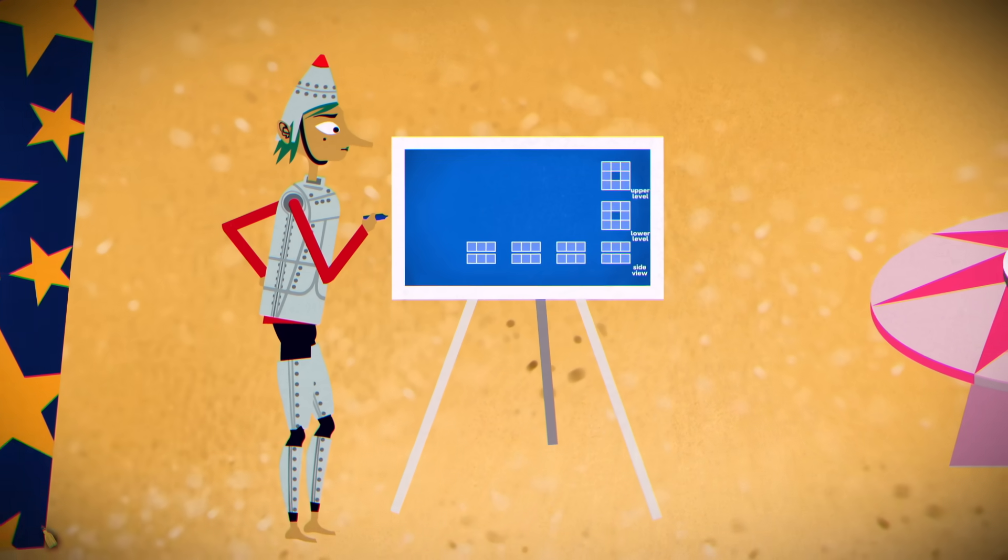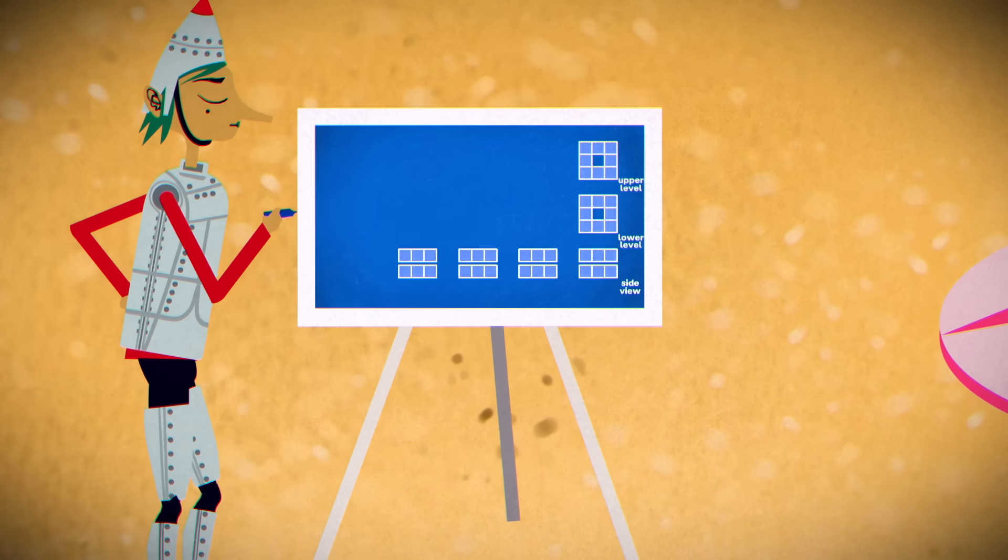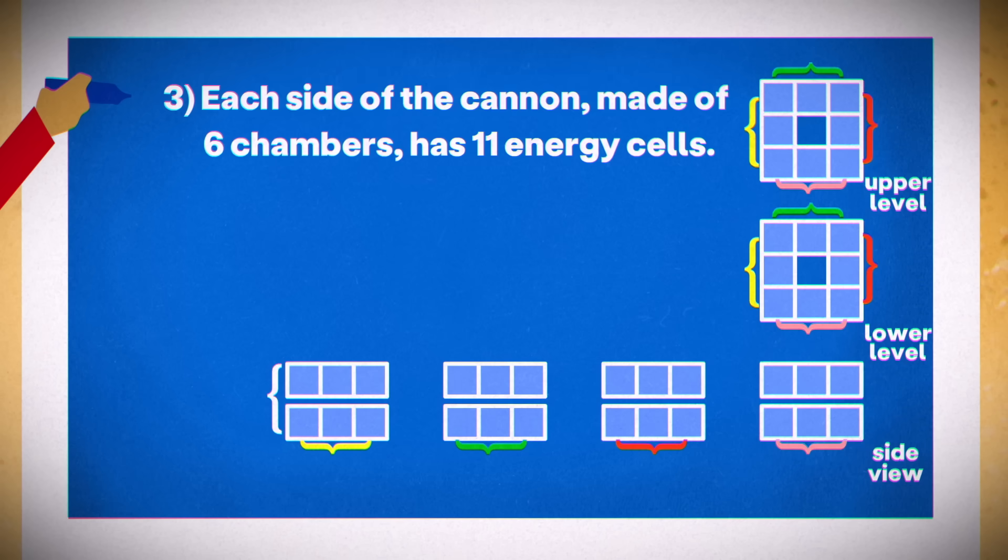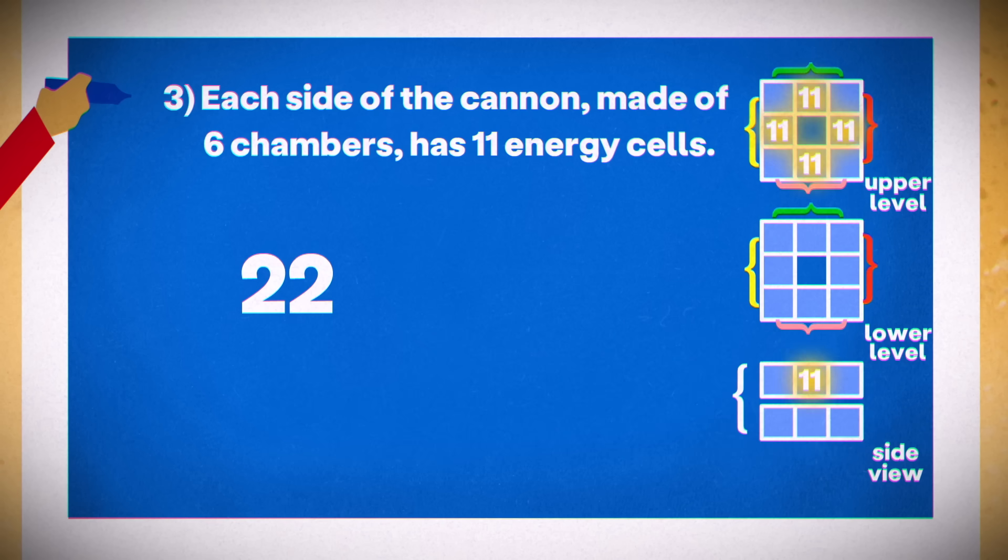The first step in this puzzle is to narrow the options. Let's focus on rule three in isolation. We could put 11 cells in these two corners and fulfill it with just 22 total cells, because adjacent sides share corners. But if we put 11 in the middle chambers, we could have 44 cells. The answer must be in the range bounded by those extremes.